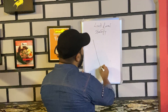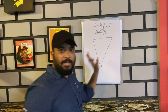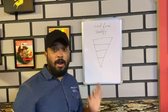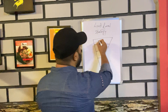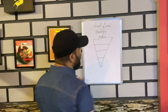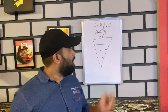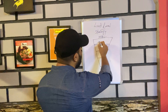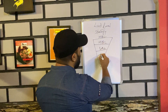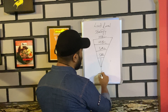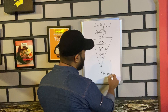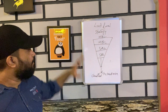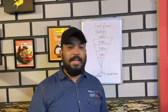As per human psychology and the buying ecosystem, all leads follow a funnel. As you can see, I have drawn a funnel. In this funnel there are four stages. The first stage is MAL — Marketing Available Leads. Second is MQL. Third is SAL or SQL. And then we have Closed Won and Closed Lost.